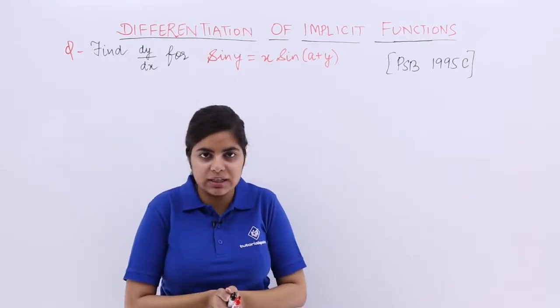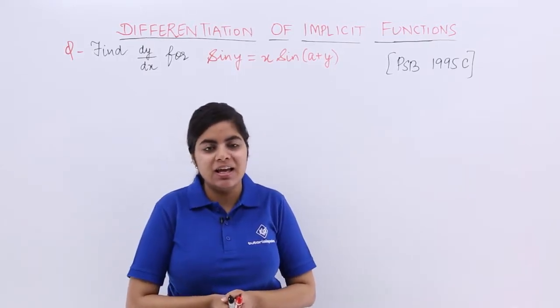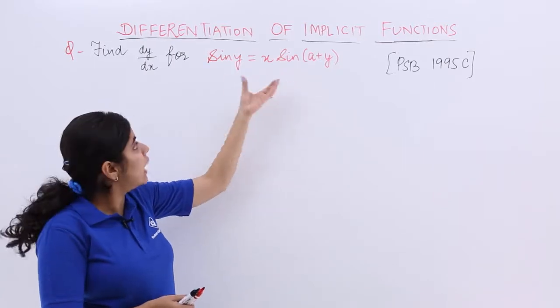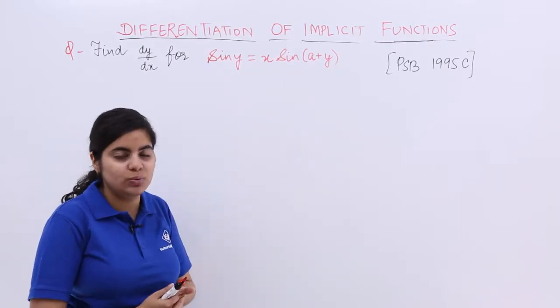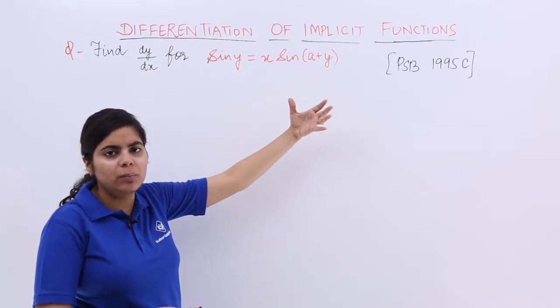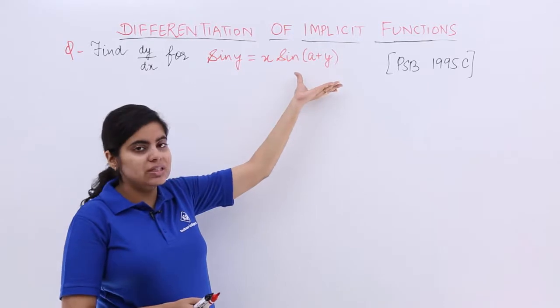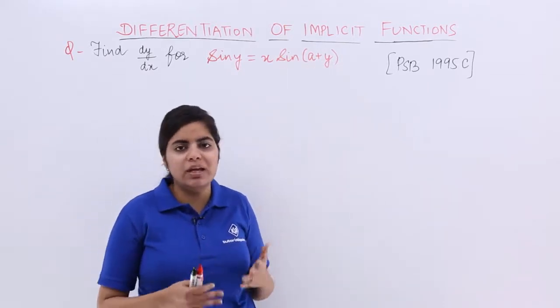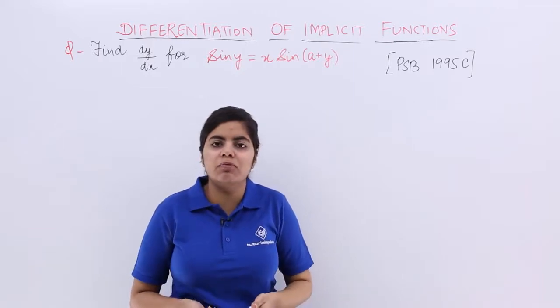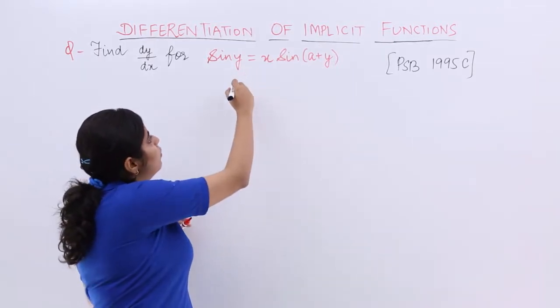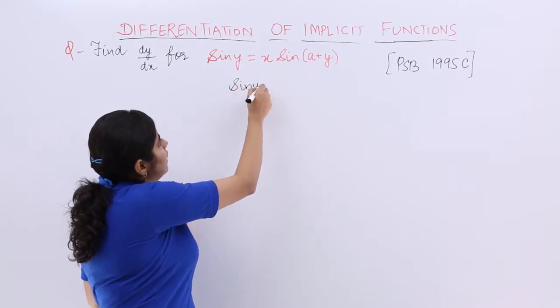You are asked to find dy/dx. Now, one thing can be done: differentiating both sides with respect to x. But here is a bracket, maybe we'll face some problem. Some of you might think sine differentiation is cos, then you have to follow a+y also. One way is to do that, but the other way is to mold the question according to our interest.